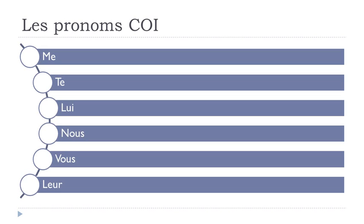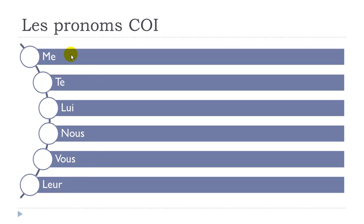Now we'll see these pronouns for all persons. First person singular: me. Second person singular: te. Third person, masculine and feminine — it's the same form: lui. First person plural: nous. Second person plural: vous. Third person plural: leur. So: me, te, lui, nous, vous, leur.